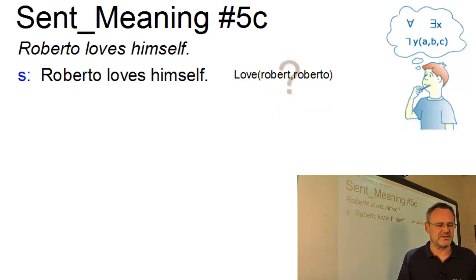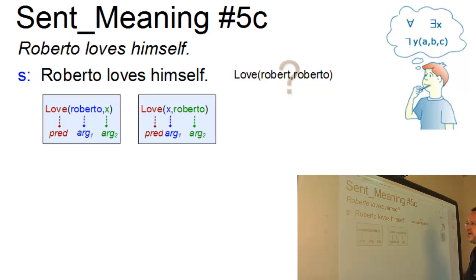However, if you want to create the possibility that any Roberto can love himself, then we have to break up our simple proposition into two predications with the same two-place predicate and the same arguments. However, the arguments are in reverse order. Love, Roberto, x and love, x, Roberto.